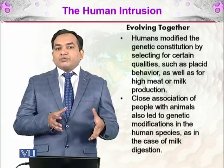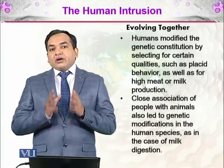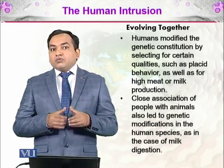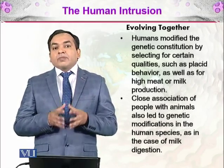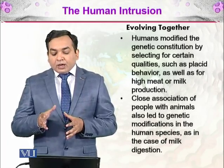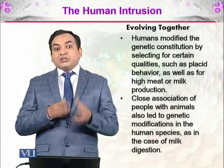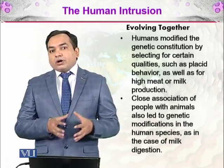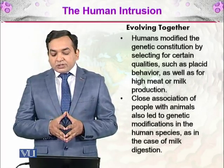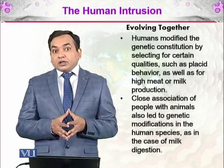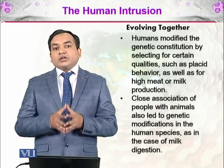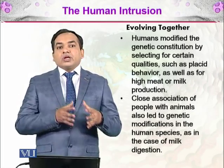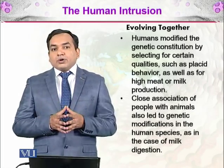Humans modified the genetic constitution by selecting for certain qualities such as placid behavior as well as high meat or milk production. Placid behavior means that if a wild animal normally has aggressive instincts suited to a wild environment, an animal that is calmer and more human-friendly can be used for domestic purposes. Similarly, animals that produce more milk or more meat are more likely to be domesticated.